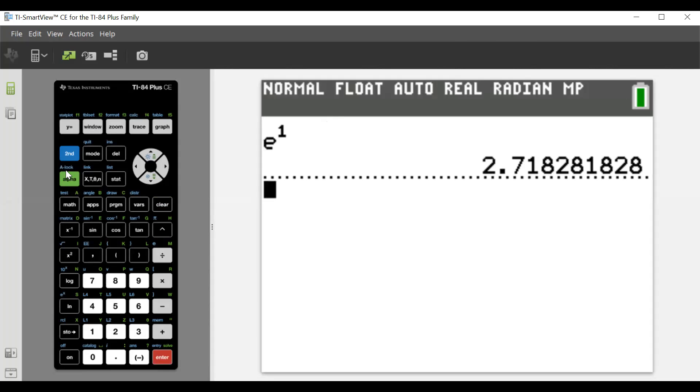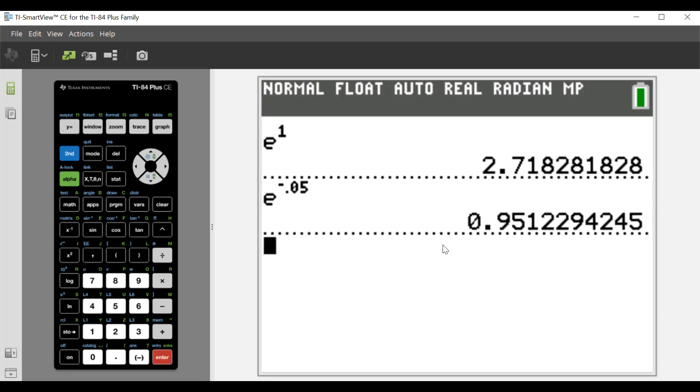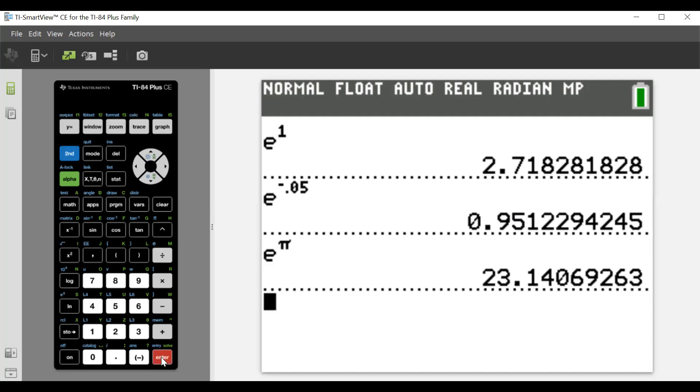Now they wanted us to find e^(-0.05), and you have to use this negative down here or it's going to give you an error, and so that's 0.9512294245. Let's round it to four decimals, so we want 0.9512. They also wanted e to the π. Well, where's π? That's the second arrow, and it looks like π on here. If we enter that one, that's 23.14069263. To four decimal places, that's 23.1407.